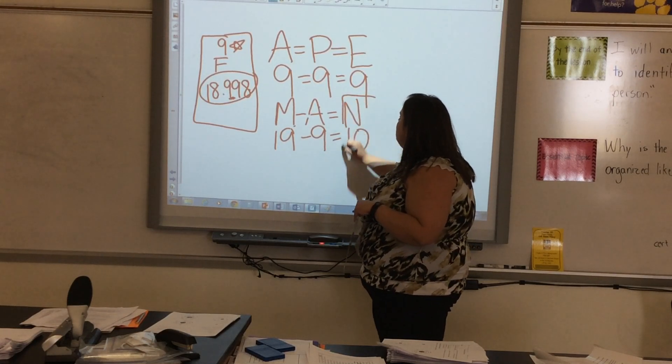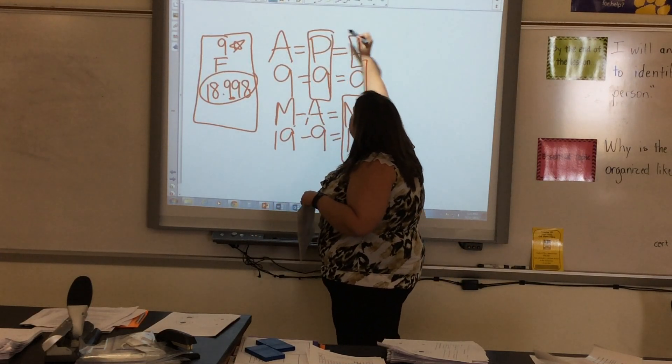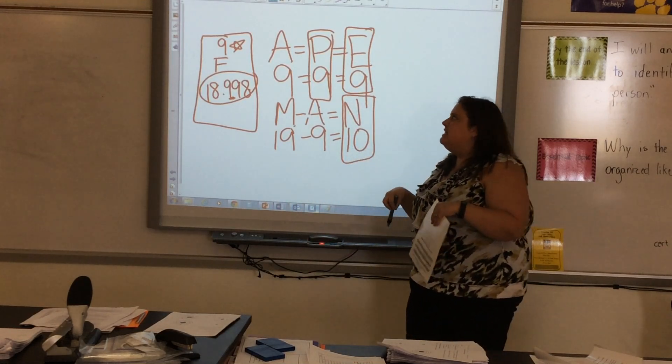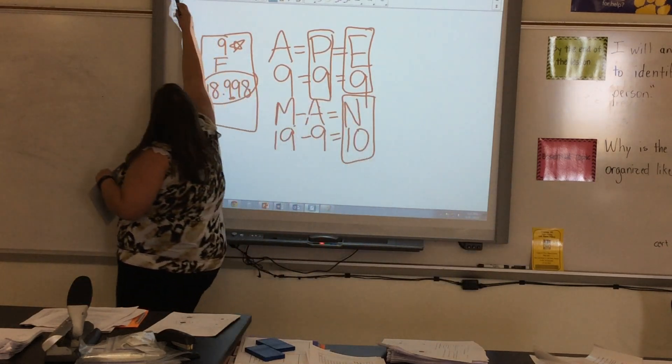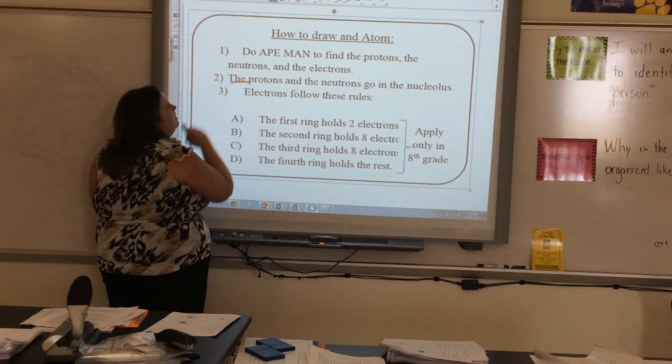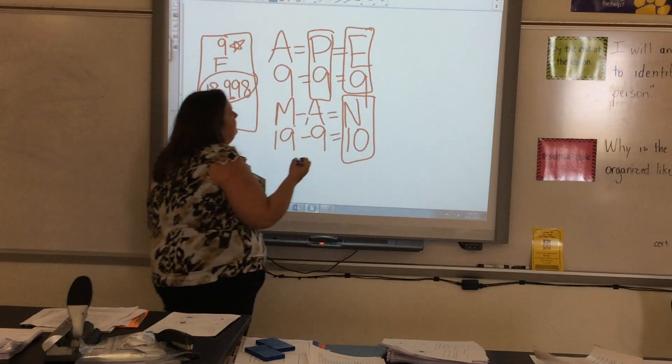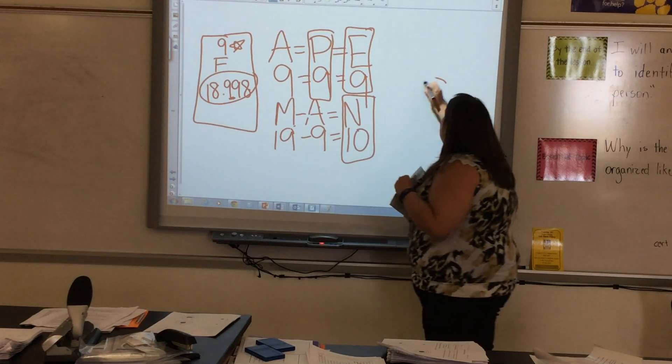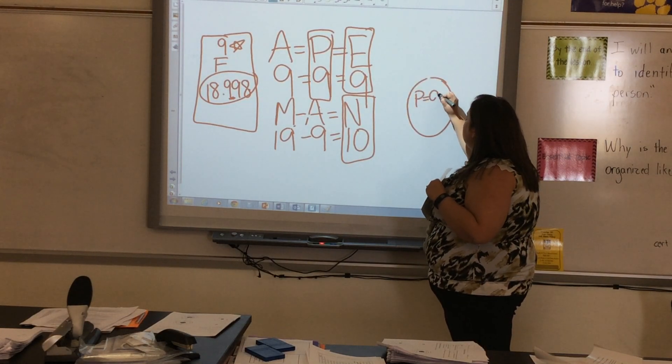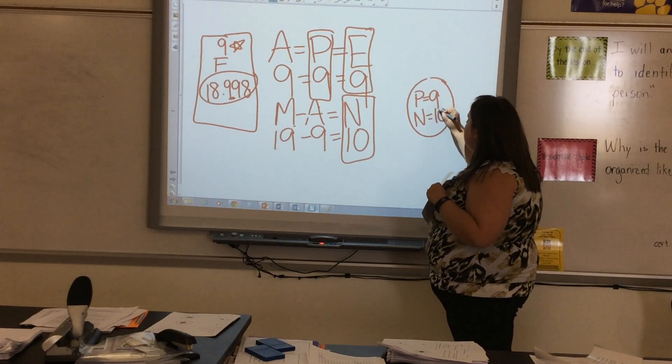So I have 10 neutrons, 9 protons, and 9 electrons. So going back to that other page, we see that the next rule tells us that protons and neutrons go inside of the nucleus. So when I draw that, I draw my nucleus, and I'm just going to put P is equal to 9 and N is equal to 10.